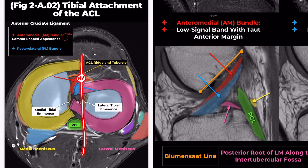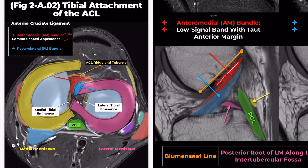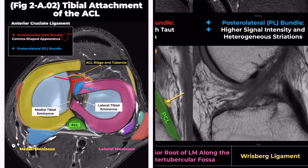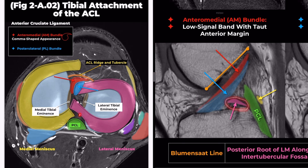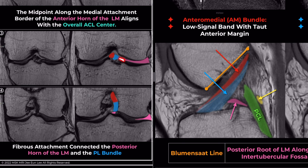Followed by the posterolateral bundle, and just posterior to this is the posterior root of the lateral meniscus, with the PCL lying further behind in sequence. These structures are sequentially aligned in the sagittal view. A dark signal line parallel to the tibial plateau, representing the posterior root of the lateral meniscus, is seen at the posterior aspect of the ACL's posterolateral bundle. There is a fibrous attachment between the posterior root of the lateral meniscus and the posterolateral bundle of the ACL, and their close proximity is clearly visible on sagittal images.